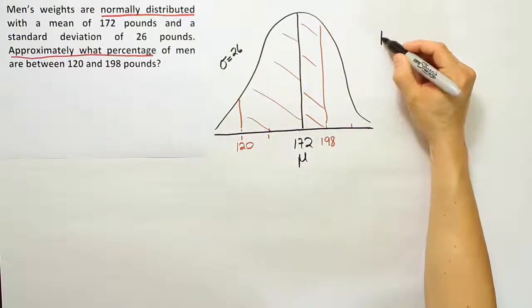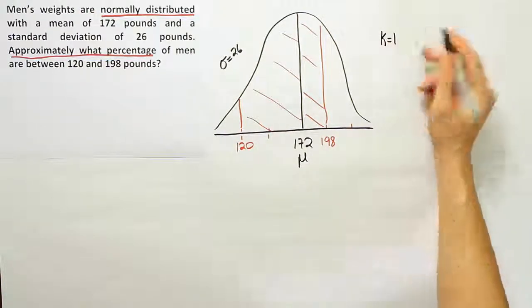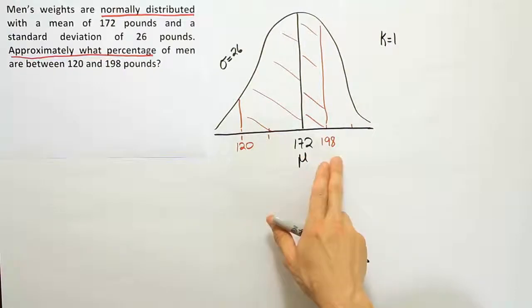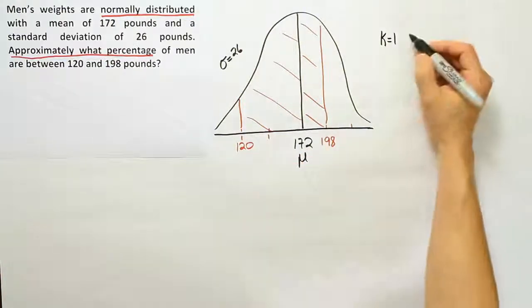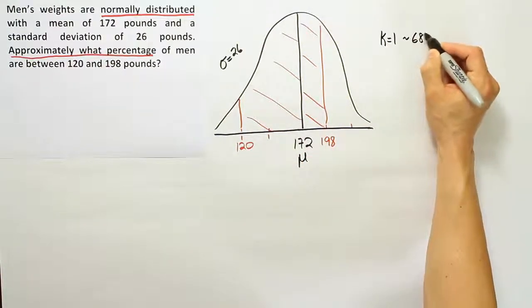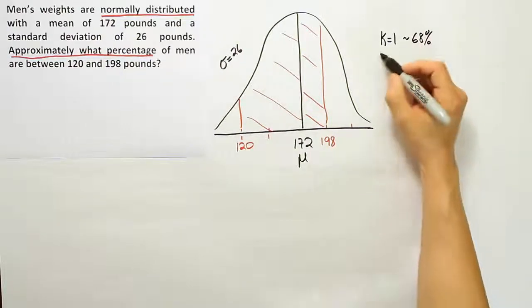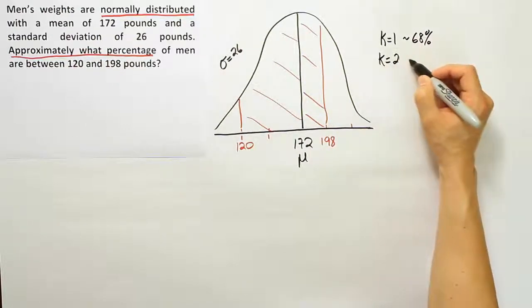When the number of standard deviations k is 1, that reflects one standard deviation above the mean, one below the mean - we capture approximately 68 percent of the data in that span. When k is 2, we capture approximately 95 percent.